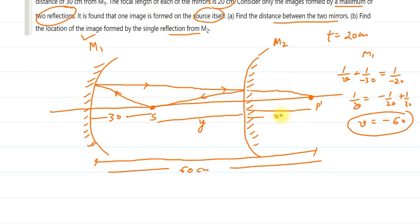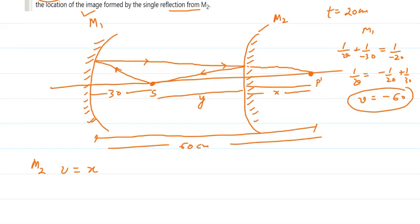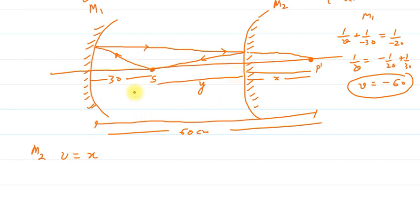For M2, the point P dash where the image formed will behave as a virtual object, and reflection will make it meet at S. Now we will go for the M2 mirror. For M2, the object distance will be x. For M2, this point P dash is basically a virtual object. If I talk about v, all these distances - 30 + y + x - are equal to 60. From here we can easily find y, it is 30 - x.